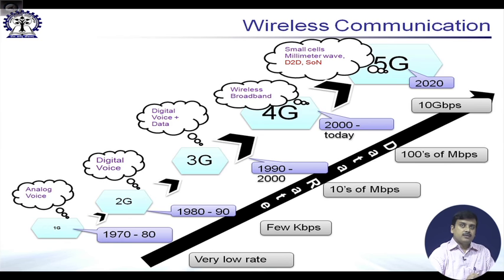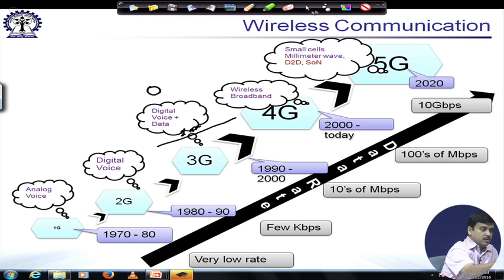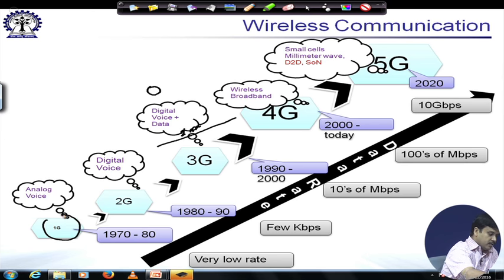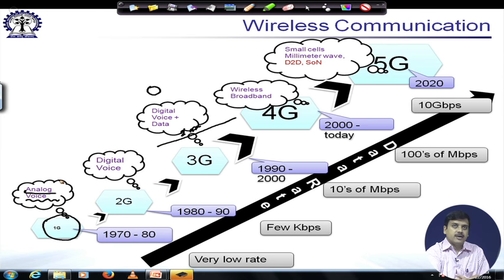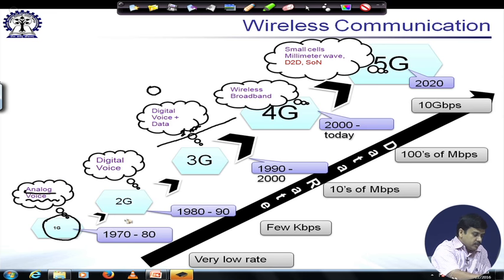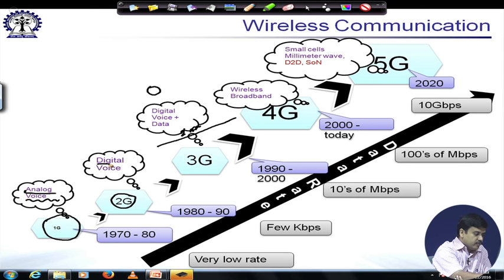Looking at the timeline, the 1G system from the 1970s to 1980s was fundamentally for analog communication, with voice as the main design factor. There was no data communication supported. Then things moved on to 2G, the second generation system, characterized by digital voice — the biggest difference being digital communications.